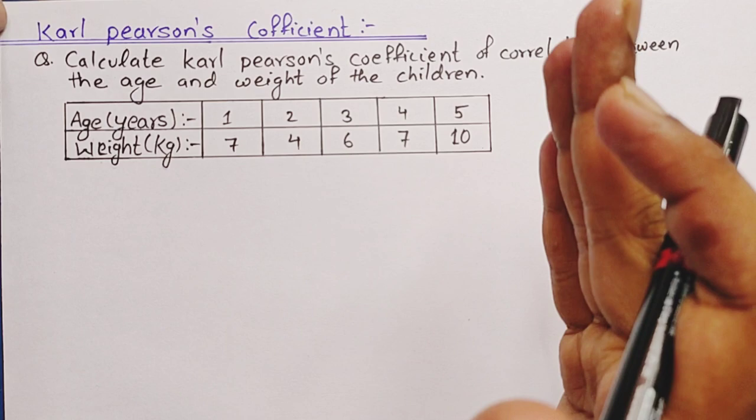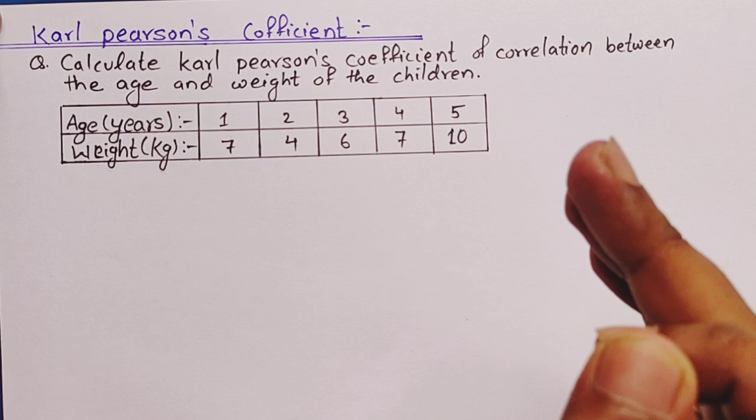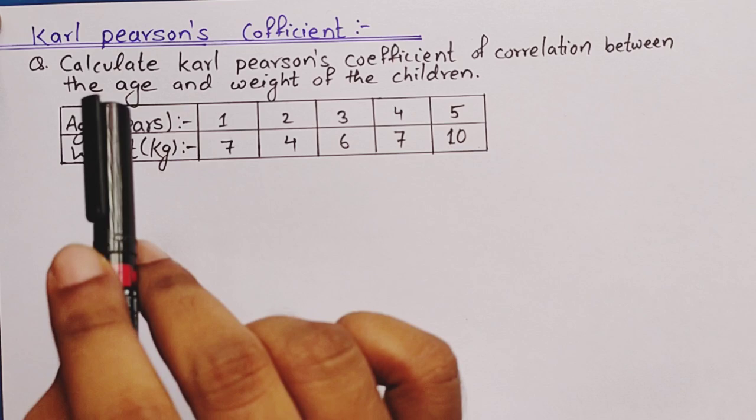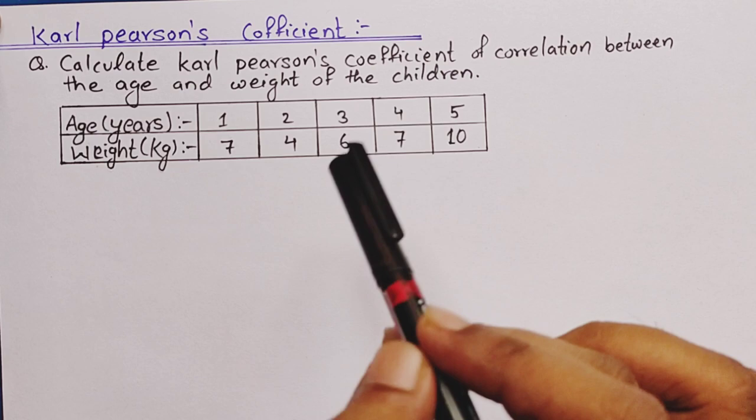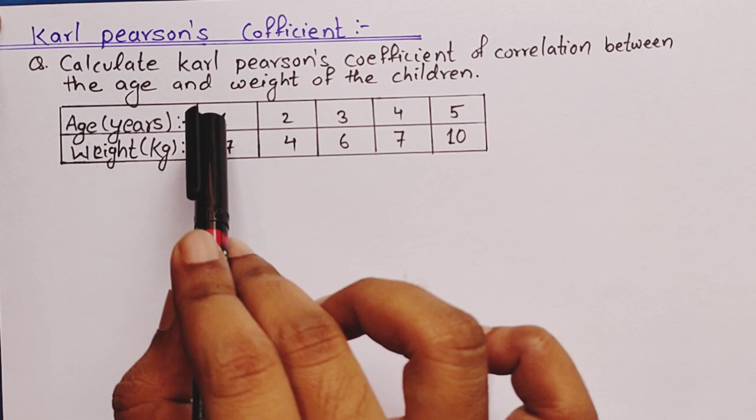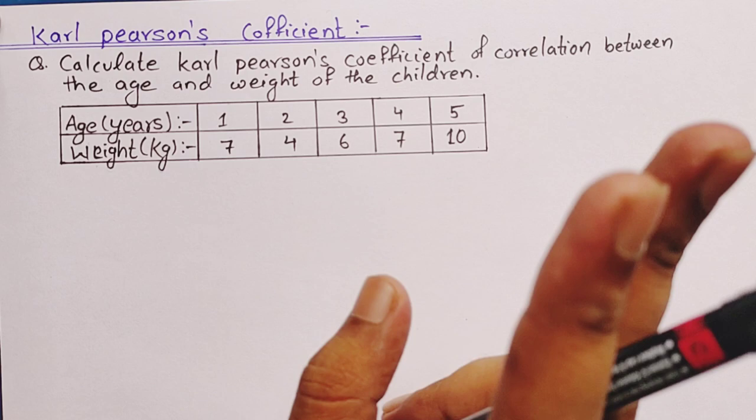Hey guys, welcome back to Civil Learning Online. Today in this video I am going to discuss how to calculate Karl Pearson's coefficient for the provided question. Here you can see I have selected a numerical in which we are provided with two variables — age and weight — and we are asked to calculate Karl Pearson's coefficient for this data.